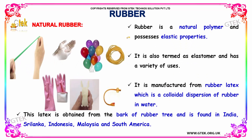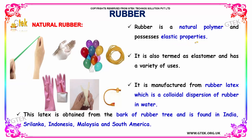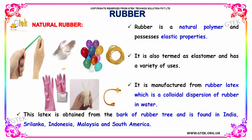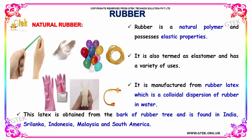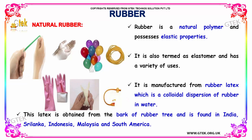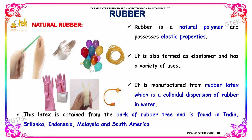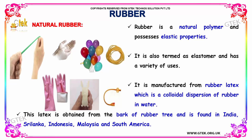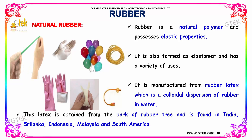Natural rubber is a natural polymer and possesses elastic properties. It is also termed as an elastomer and has a variety of uses. It is manufactured from rubber latex, which is a colloidal dispersion of rubber in water. This latex is obtained from the bark of trees found in India, Sri Lanka, Indonesia, and other countries containing lots of forests.